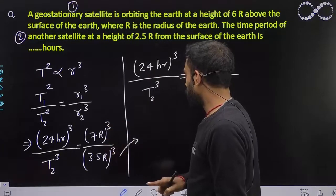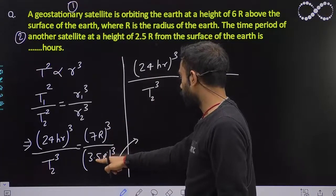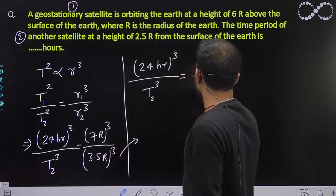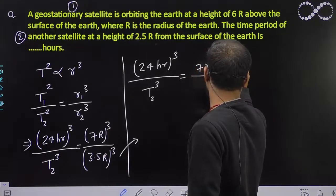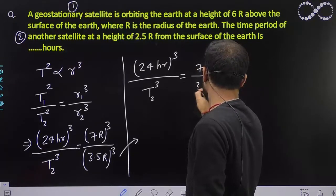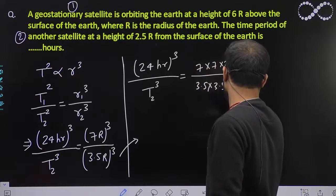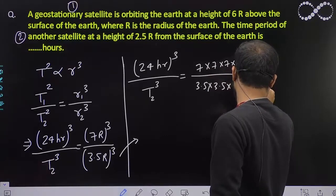That will... R cubed will get cancelled out and 3.5 is nothing but 7 upon 2. You can say that this will be 7 into 7 into 7 into R cubed and this will be 3.5 into 3.5 into 3.5 into R cubed.